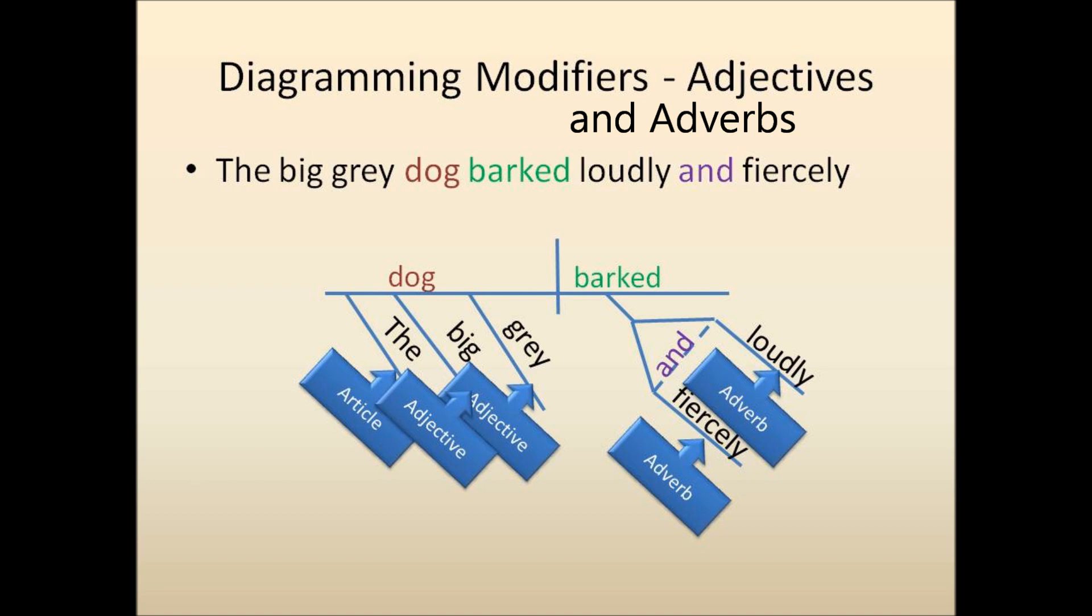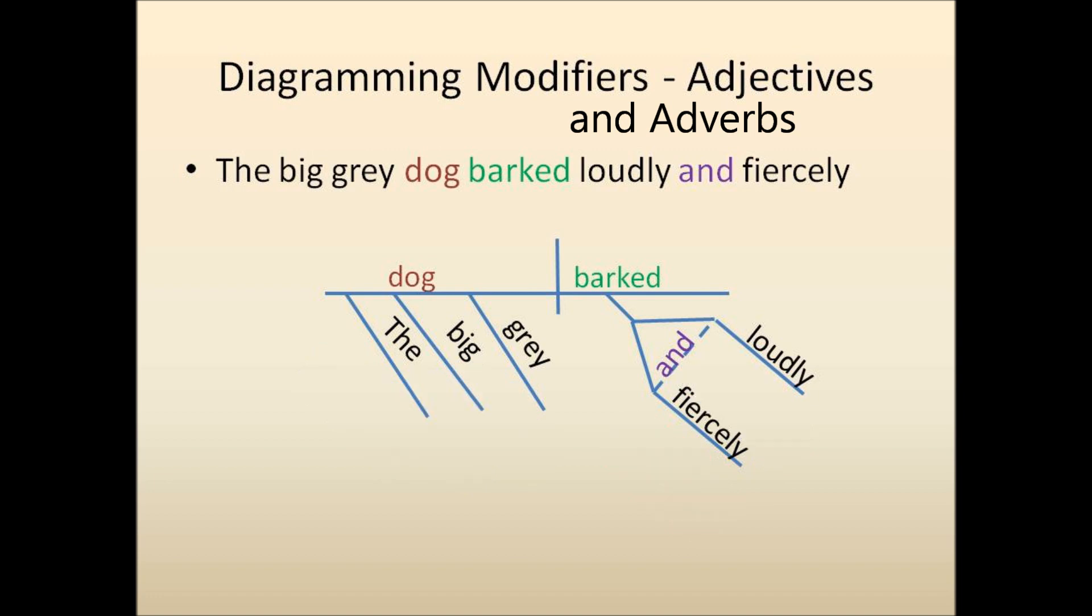The word 'the' is an article that describes dog. Big describes dog. Gray describes dog. Loudly describes how the dog barked. Fiercely also describes how the dog barked. So in the end, we come up with a diagram. The big gray dog barked loudly and fiercely.